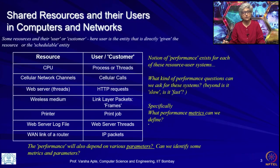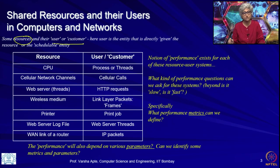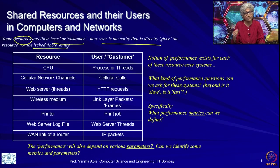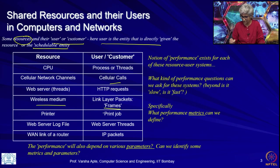We had also made a list of pairs of resources and their user or customer entity. Remember that user here is the entity to which the resource is directly given — the schedulable entity. So for CPU it is threads, for cellular network channels it is calls, for the wireless medium it is frames, for the link it will be packets, and so on.